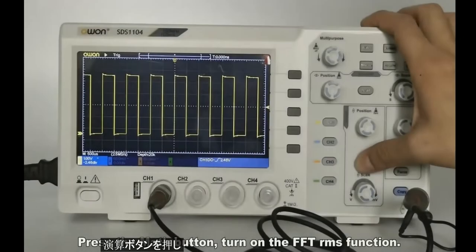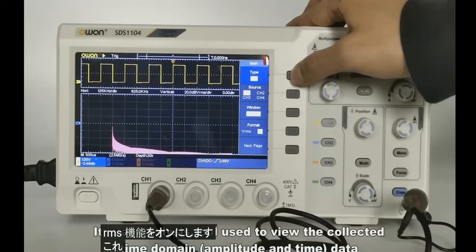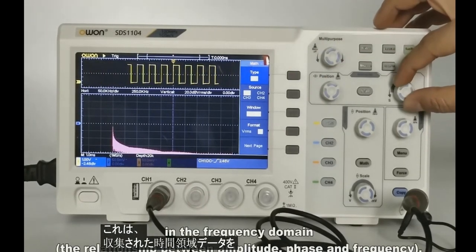Press the Math button to turn on the FFT RMS function. It is an analysis tool used to view the collected time domain data in the frequency domain.